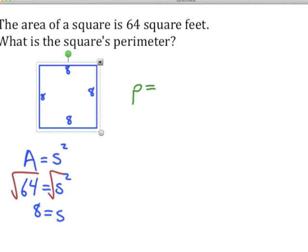There are four sides and all the sides are the same, so we could just say the perimeter is 4 times 8. In this case that would be 32 feet.